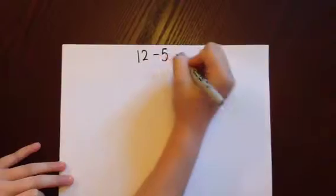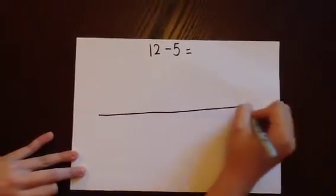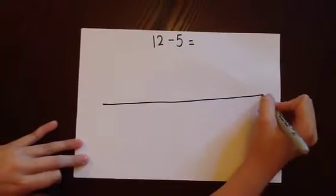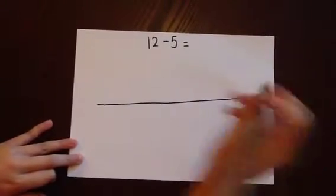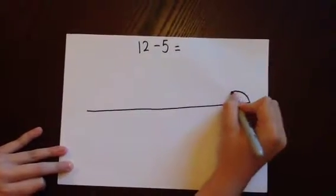As subtraction is the inverse of addition, we'll begin our sum at the opposite end of the number line. We begin by writing the number 12, and we're going to be drawing 5 jumps as there are 5 units that we're taking away.